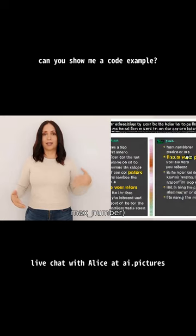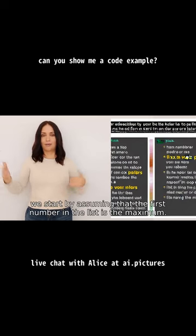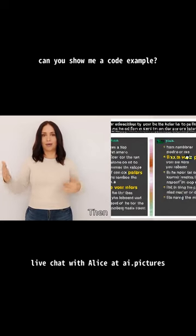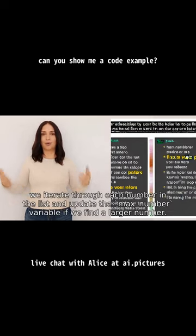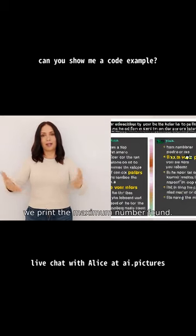In this example, we start by assuming that the first number in the list is the maximum. Then we iterate through each number in the list and update the max_number variable if we find a larger number. Finally, we print the maximum number found.